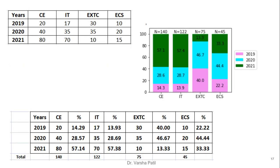In another example, CE, IT, EXDC, and ECS departments are given with the number of students placed in a particular year. We can easily find that in CE in 2021 the largest number of placements occurred. The total is calculated, percentages are derived, and reflected in a percentage subdivided bar diagram.